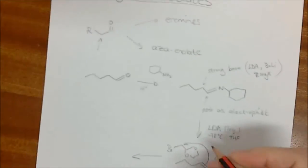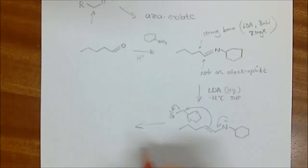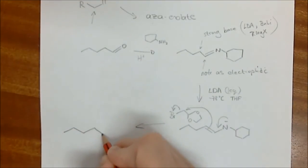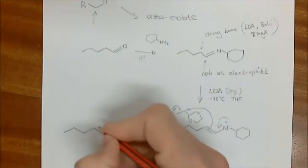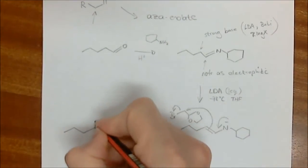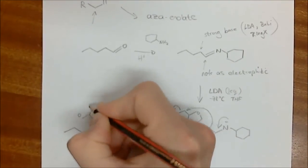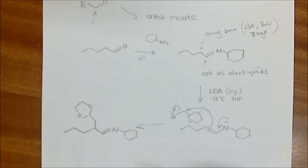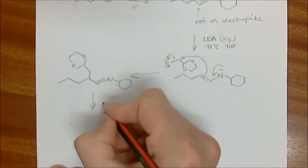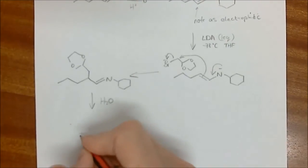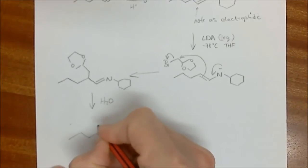Mechanistically the enolate attacks the electrophile and we form the alkylated product. Make sure you're counting all your carbons — don't lose carbons as you go along, as it's very easy to do that. The new carbon-carbon bond is formed at that alpha position. When we hydrolyze — adding water — we go back to the aldehyde and get the alkylated aldehyde product.